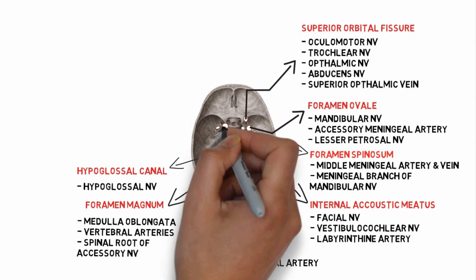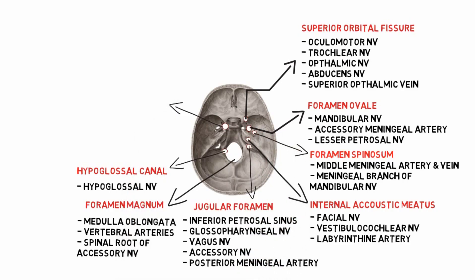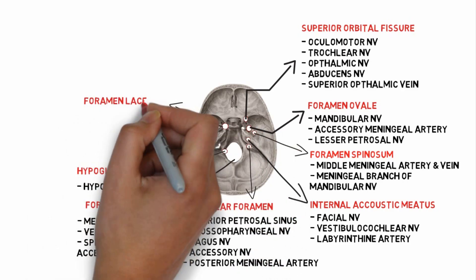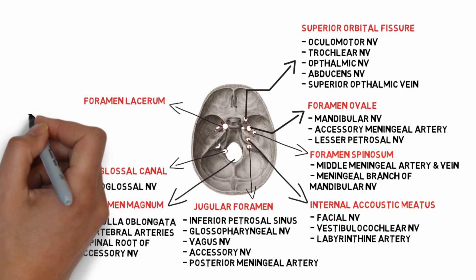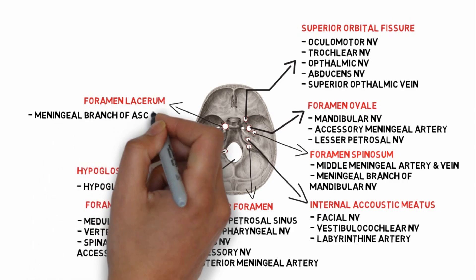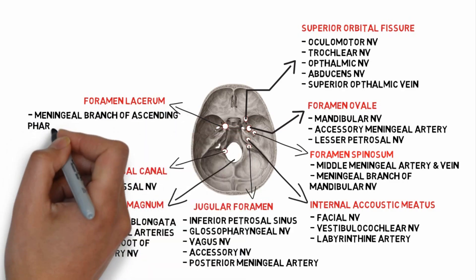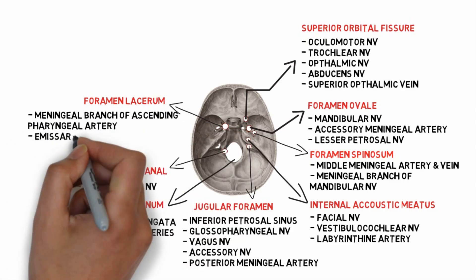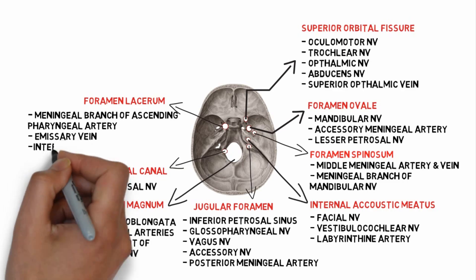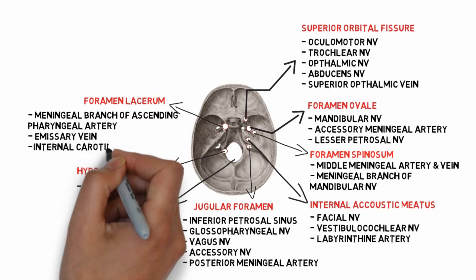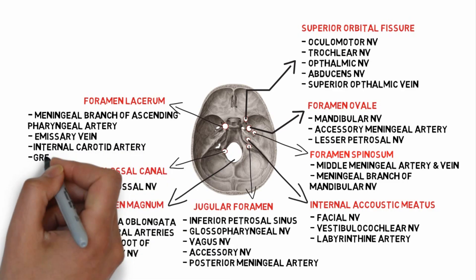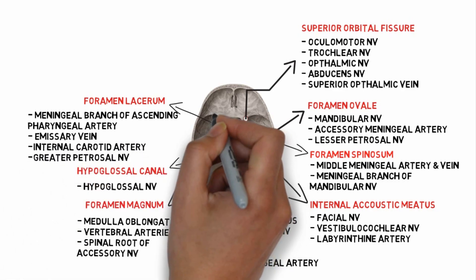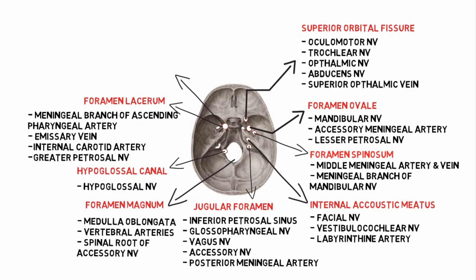The eighth one is the foramen lacerum. Structures passing through it include the meningeal branch of the ascending pharyngeal artery, emissary vein, internal carotid artery, and the greater petrosal nerve.